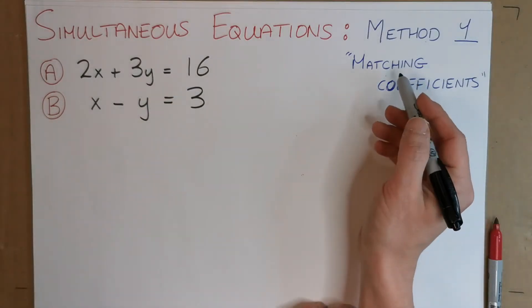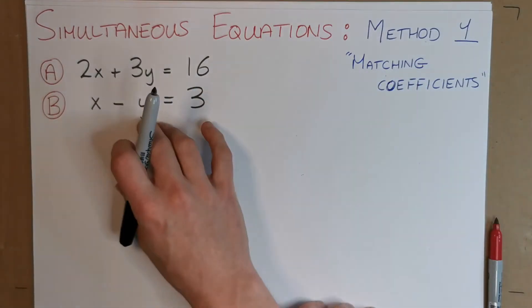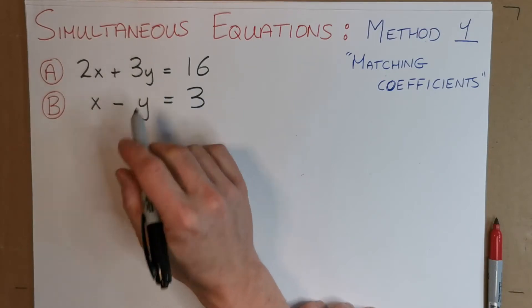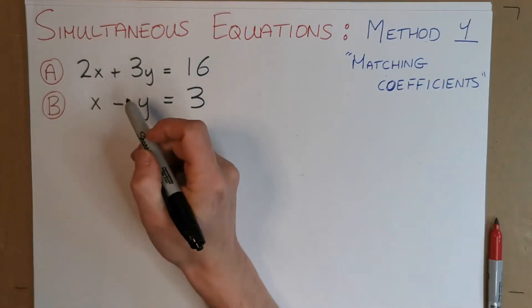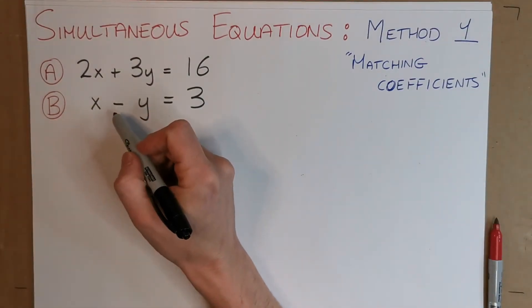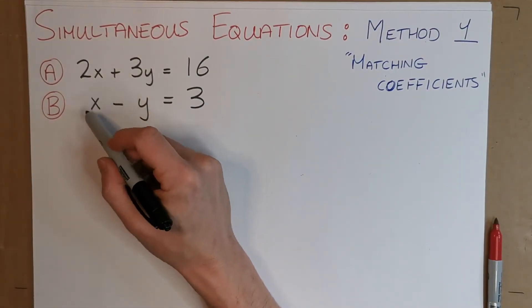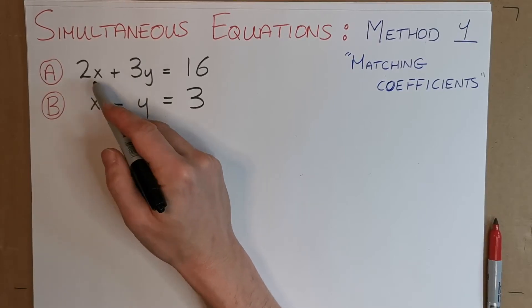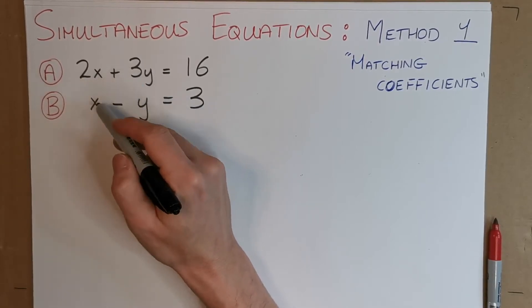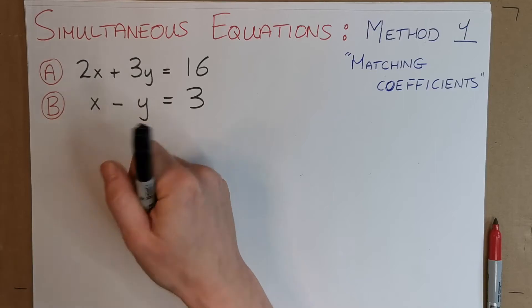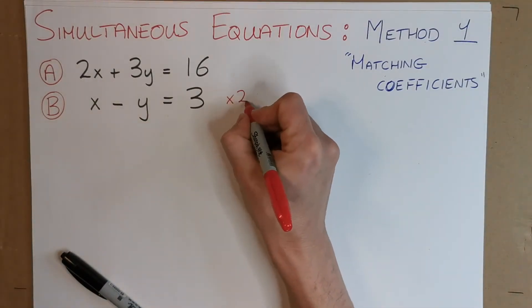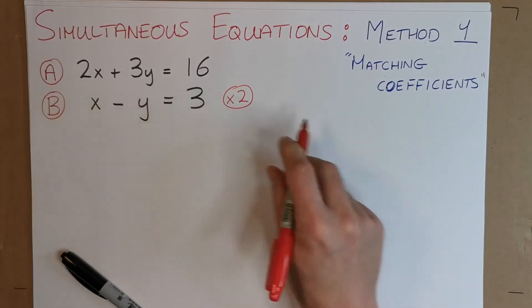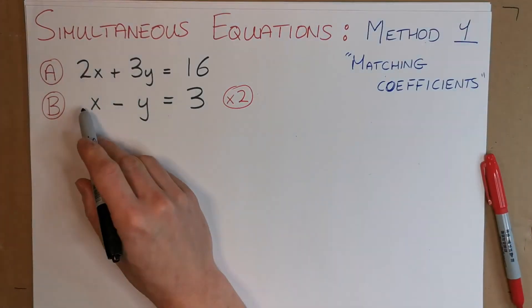So this matching coefficients method, I'm going to do a simple example first, where I'm going to match up the coefficients of one of the variables. Let's look at the bottom equation and try and match this X up with this X up here. On top, we have 2X. From the bottom, we just have a single X. That means if we multiply this bottom equation by 2, and that means everything by 2, we will get 2X in front, which is what we want.